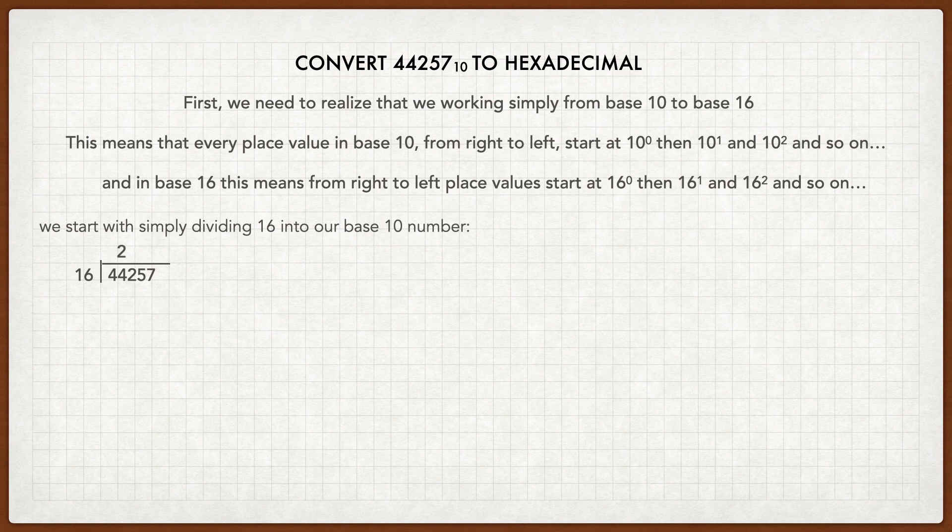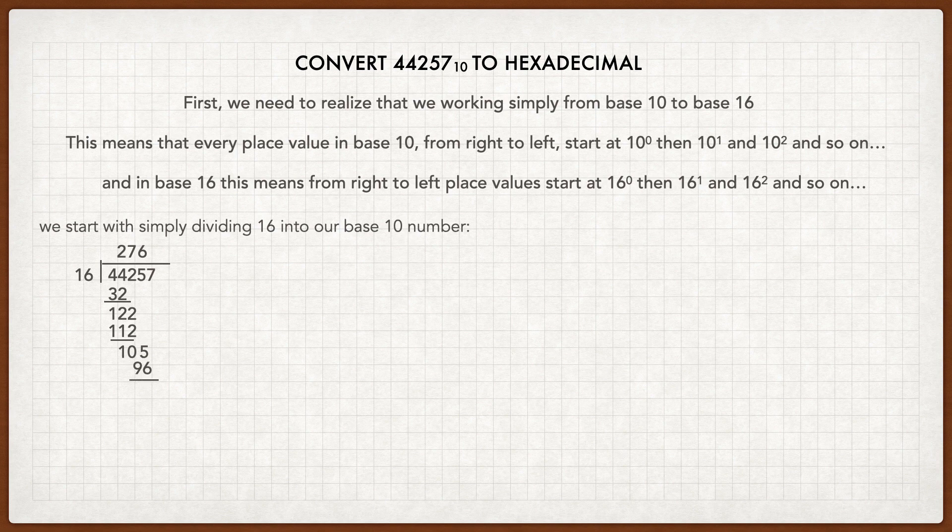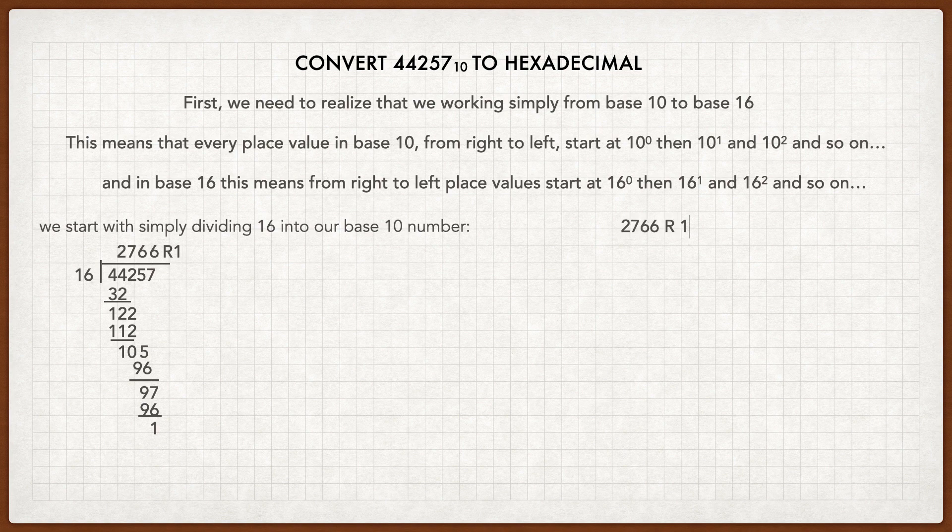So 16 into 44,257. 16 goes into 44 twice, that's 32, gives you 12. Bring down the 2. So we're just going to do some guessing here. 7 times 16 is 112, so we're left with 10. We're going to bring down that 5. And then we know that 6 times 16 will be less than 105, it's 96. We're left with 9. Bring down the 7, and we're left with 6. Now 97 minus 96 is 1, so we have a remainder of 1. And we're going to write that over here on the side and we'll leave it for later.